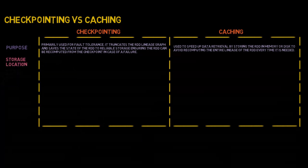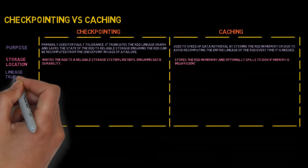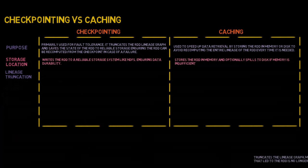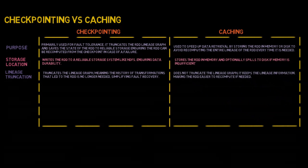Regarding storage location — Checkpoint writes the RDD to a reliable storage system like HDFS, ensuring data durability. Cache stores the RDD in memory and optionally spills to disk if memory is insufficient. Regarding lineage truncation — Checkpoint truncates the lineage graph, meaning the history of transformations that led to the RDD is no longer needed, simplifying fault recovery. Cache does not truncate the lineage graph; it keeps the lineage information, making the RDD easier to recompute if needed.